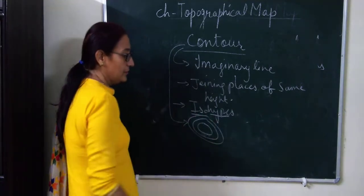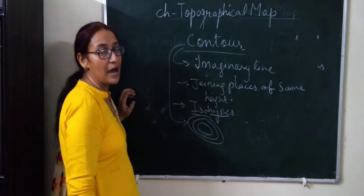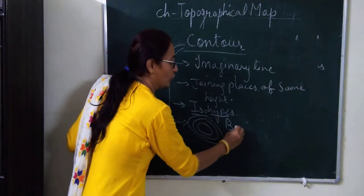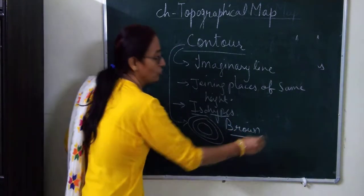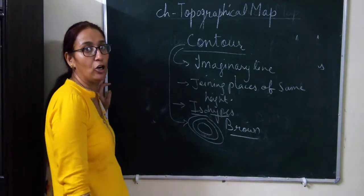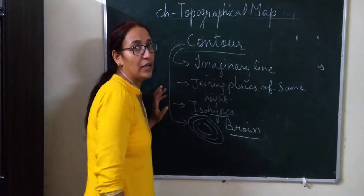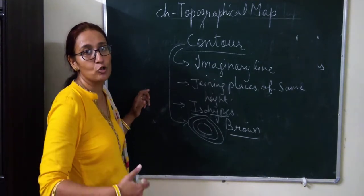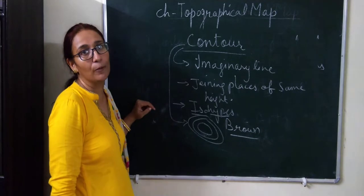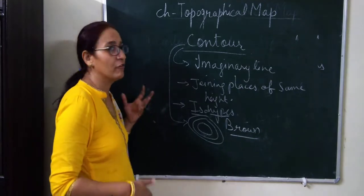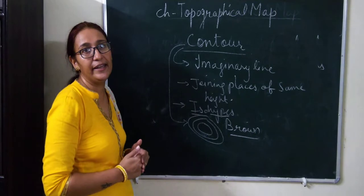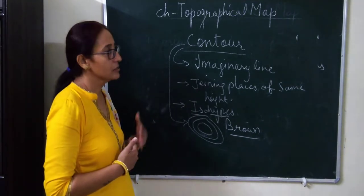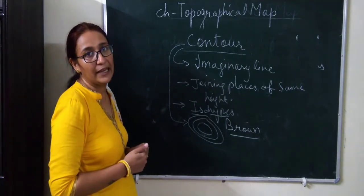Brown color is used to represent contour lines. Contour lines are very important because with the help of these imaginary lines we depict the height of landforms, and we can also identify the slopes of different landforms. So contour lines are very helpful in topographical maps.